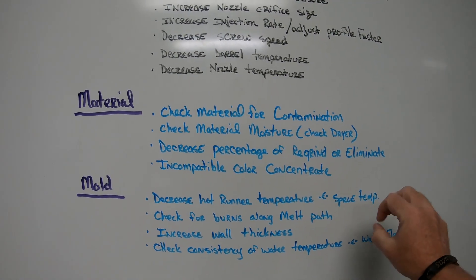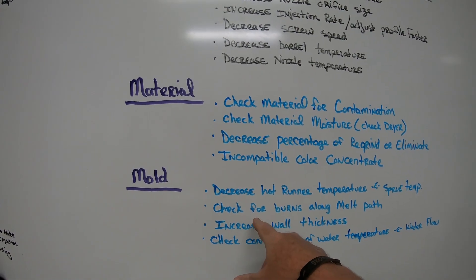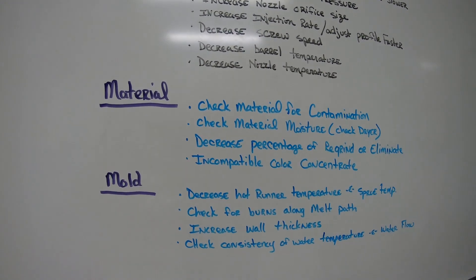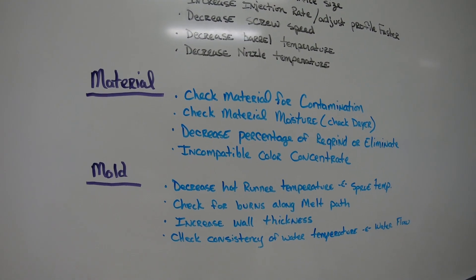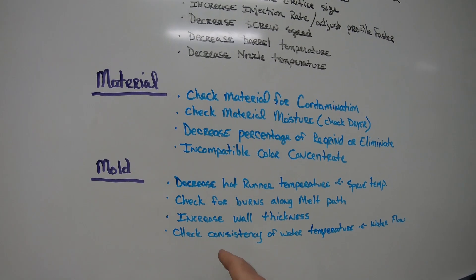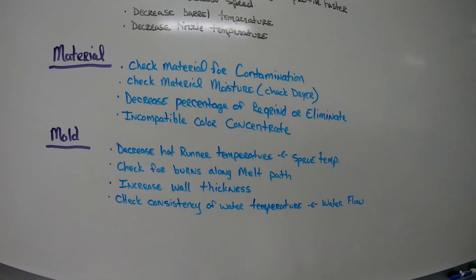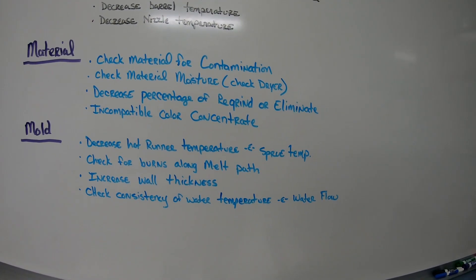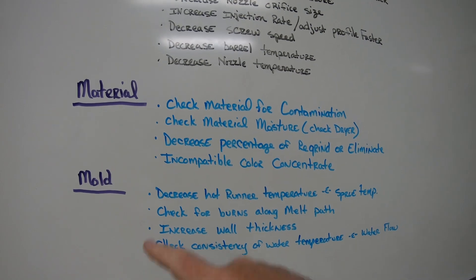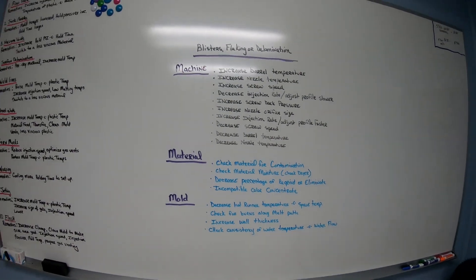On the mold side: decrease the hot runner temperature or sprue temperature so it's not too hot, check for burns along the melt path — wherever the material flows, double-check all that area — increase wall thickness, and check the consistency of water temperature and water flow to make sure coolant is getting through everything.